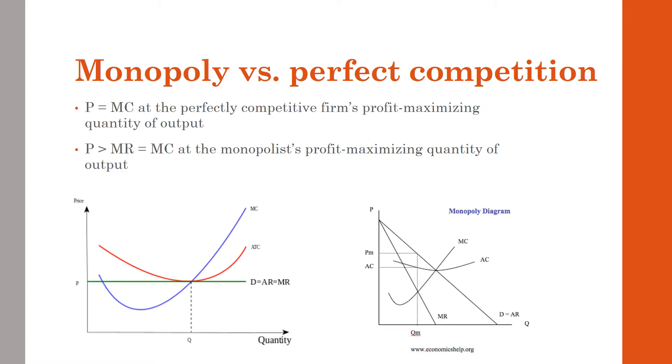Comparing the two, price equals marginal cost for the perfectly competitive firm at their profit-maximizing quantity of output. You see that on the left-hand side, the MC curve is intersecting the MR curve at Q, that is their profit-maximizing output where MC equals MR. And we know that because their price is equal to their marginal revenue, that also means that marginal cost will be equal to price, so price equals marginal cost.